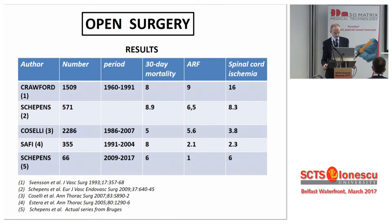Via a midline laparotomy and transperitoneal approach, the visceral vessels are bypassed towards the infrarenal aorta or the iliac arteries, using 6 or 8 mm grafts.